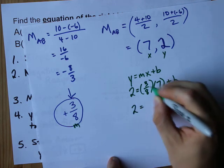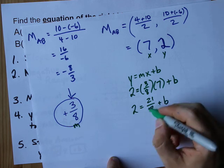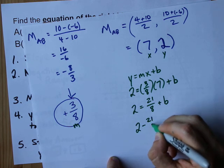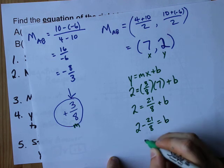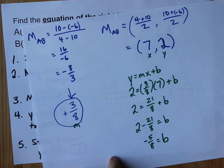It's not too bad. 2 equals, this gives me 21 eighths when I multiply it. When I subtract that on the other side, I believe I get negative 5 eighths, and so that is the b value here.